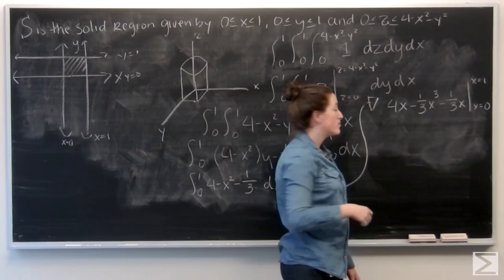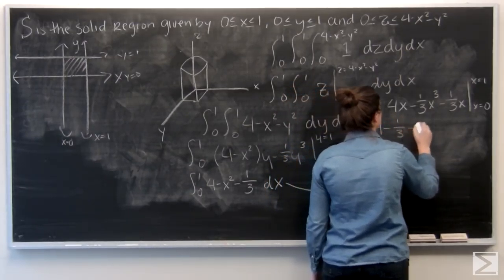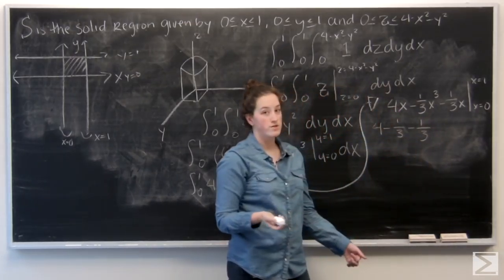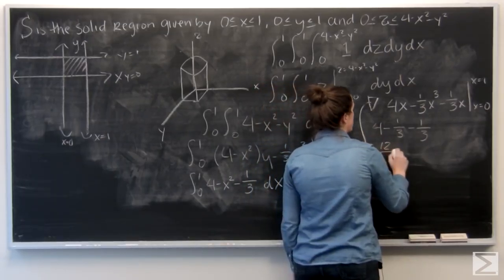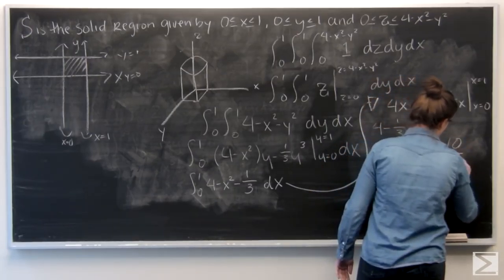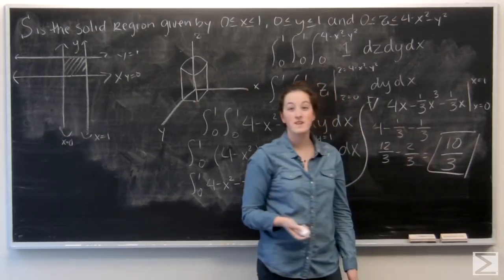So I'm just going to plug in 1 into everything. 4 minus 1 third, minus 1 third. And then for x equals 0, all those terms drop out. So add these together. 12 thirds minus 2 thirds. 10 thirds. And that's my answer.